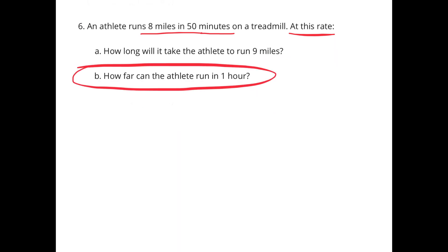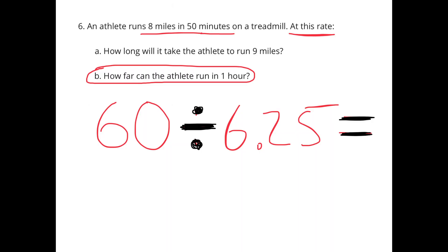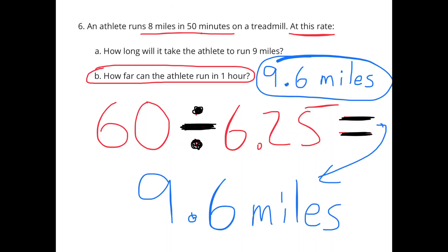How far can the athlete run in 1 hour? 1 hour equals 60 minutes. 60 minutes divided by 6 and a quarter minutes equals 9 and 6 tenths. The athlete can run 9 and 6 tenths miles in 1 hour.